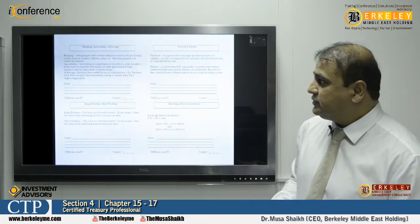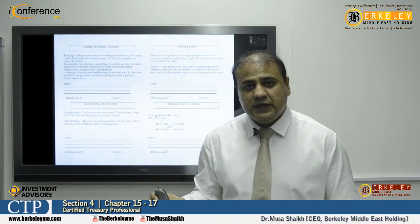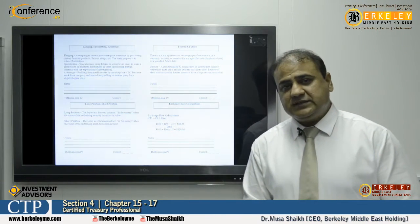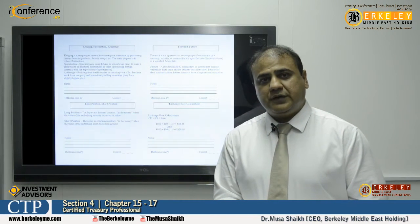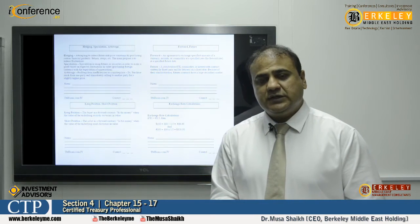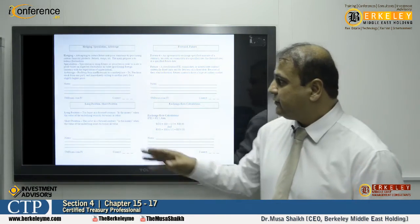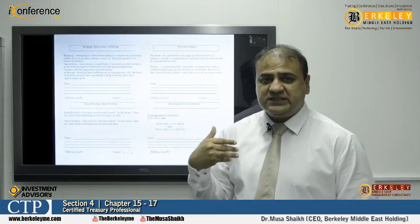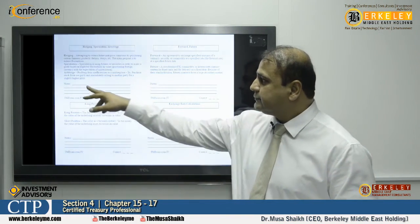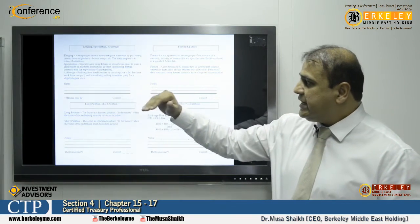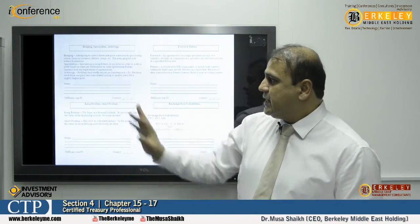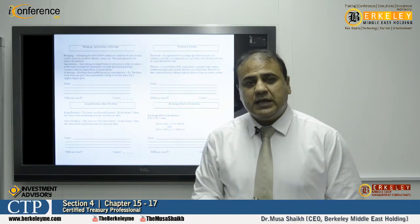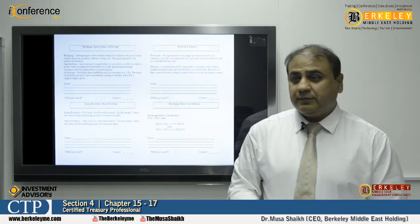Hedging is offsetting your risk against adverse price changes. We can hedge our uncertainties — for example, if you feel the dollar is going to be expensive in terms of euros, there are many treasury products that can hedge and offset your risk, resulting in a gain or loss as revenue. Speculation is using futures or securities to make a profit based on an expectation. Arbitrage is profiting from inefficiencies in the marketplace by purchasing a stock from one party and immediately selling it to another for a slightly higher price, which is only possible in inefficient markets.